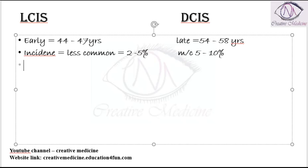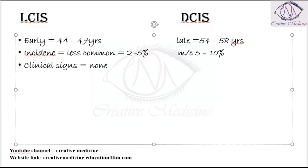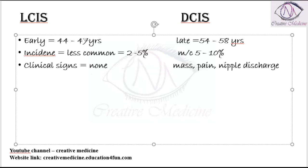Clinical signs. Clinical signs in lobular carcinoma are almost none — there are no clinical signs. Whereas clinical signs in ductal carcinoma include mass, pain, and nipple discharge.